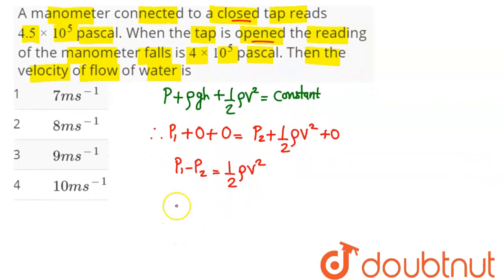the velocity of the flowing water comes out to be two times the pressure difference, that is p₁ - p₂, divided by the density ρ.